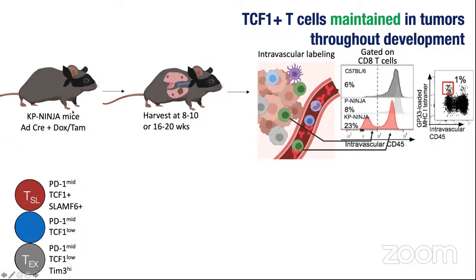We initiate tumors in the KP-NINJA mouse, which has the NINJA allele to elicit a T cell response, developing tumors slowly over several months. We look at tumors at an early time point (~8-10 weeks) and a late time point when tumors are larger and more advanced (~16-20 weeks). We use an intravascular labeling technique where injecting antibodies into the highly vascularized lung allows us to determine which cells are in the lung — they show up antibody-negative. In a naive mouse or one that doesn't form a tumor, these T cells are largely absent, confirming these cells are present because of the tumor.